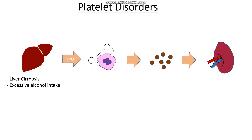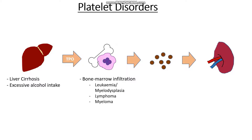Then we could have an issue with the production factory of our platelets, our bone marrow. Things for this include things that infiltrate the bone marrow, so things like leukemia, or myelodysplasia, which is the precursor to leukemia, however we haven't met the cell count to be classified as leukemia. We could have things like lymphoma, where we have a cancer of our lymph nodes, and this over spills into the blood and infiltrates our bone marrow. We could have things like myeloma, where we have a cancer of our plasma cells inside of our bone marrow. And finally, we could have a scarring of the bone marrow matrix in a condition known as myelofibrosis.